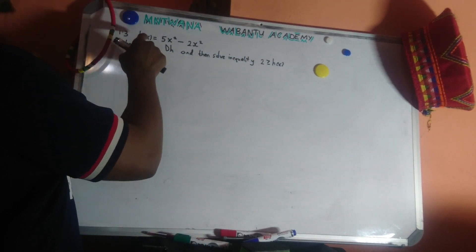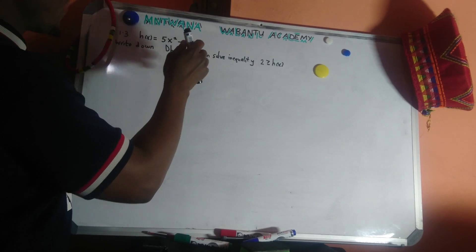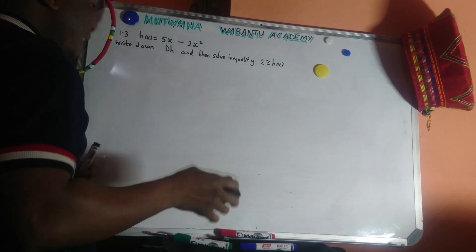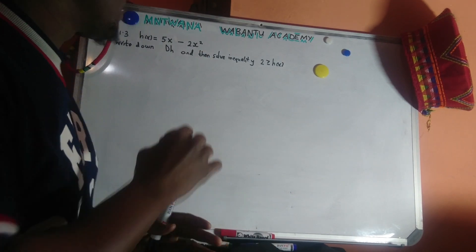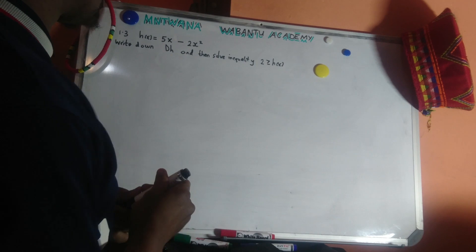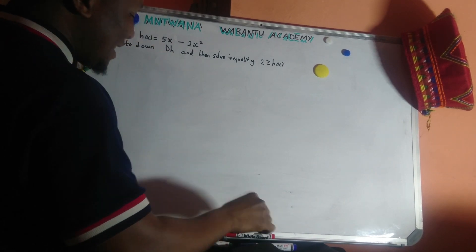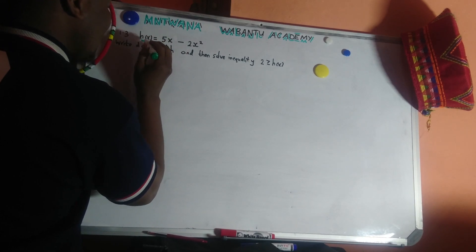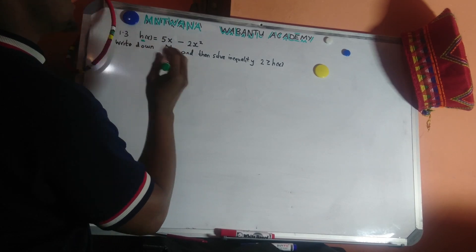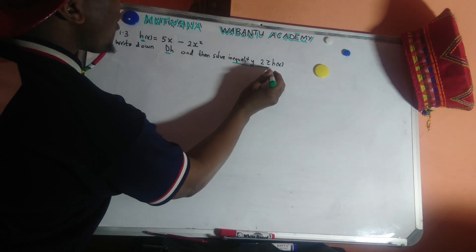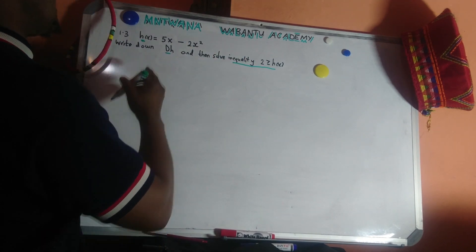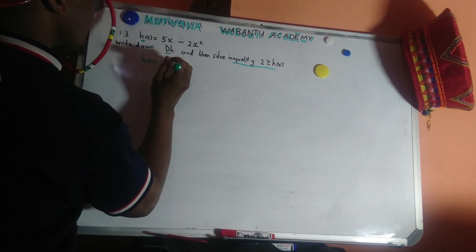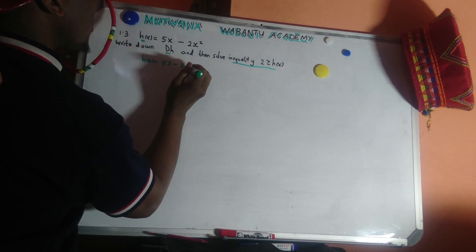So let's see how we can solve this question. We are given h of x equal to 5x minus 2x squared. My apologies — there's no 5x squared; it's just 5x. So it's 5x minus 2x squared. They say write down the D of h, which means the domain of this function h. That's just D of h, and then solve the inequality.